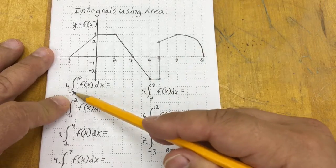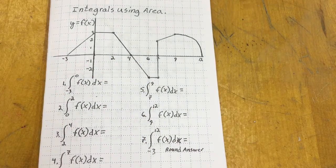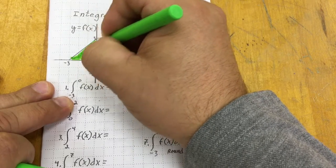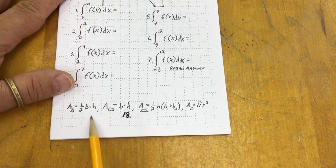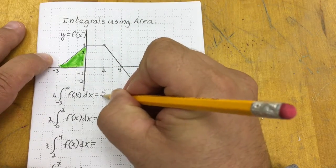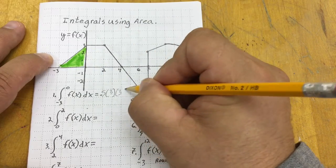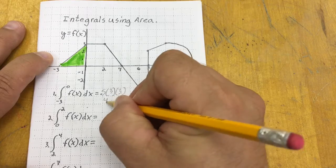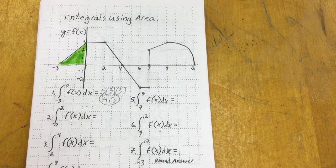So from negative 3 to x equals 0, I basically wish to find out the area of this triangle. I could use the integral formula or just the basic area of the triangle, which is 1 half base times height. So 0.5 times the base which is 3 times the height which is 3, and the area of that triangle is going to give me half of 9, or 9 halves, or 4.5.